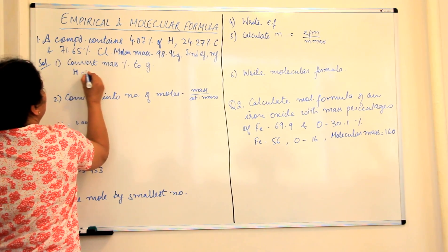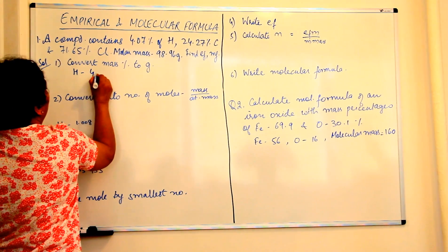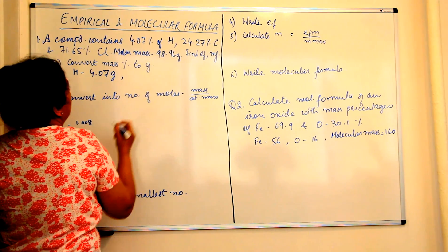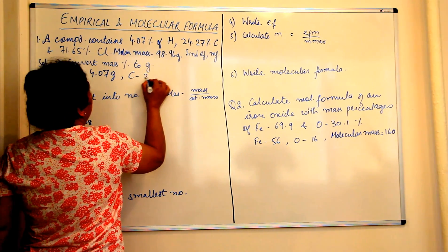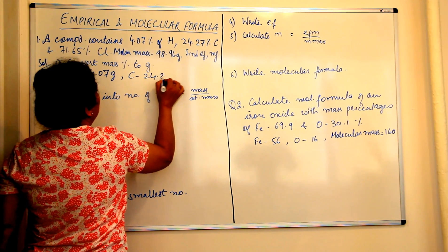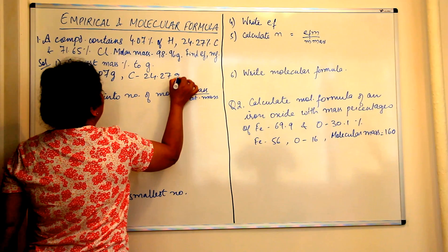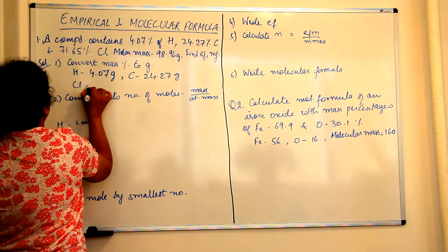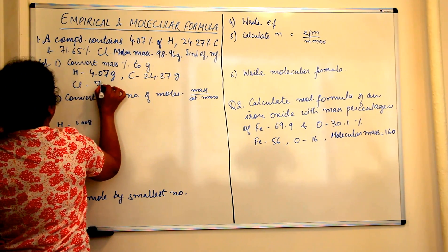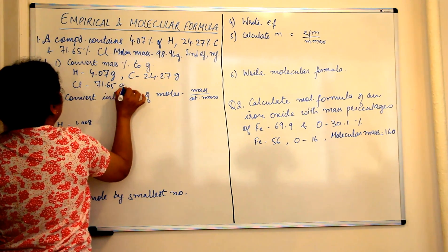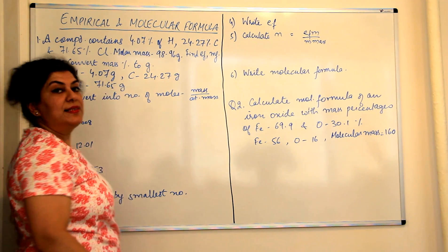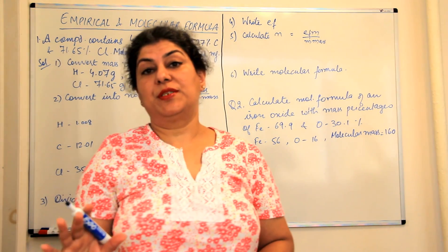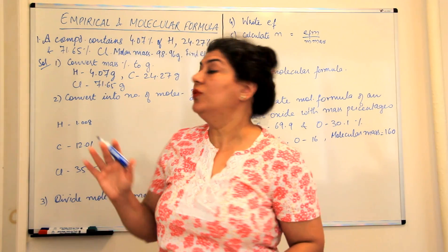So hydrogen is 4.07 grams, carbon is 24.27 grams, and chlorine would be 71.65 grams. That's the first step: convert all the mass percentages into grams.